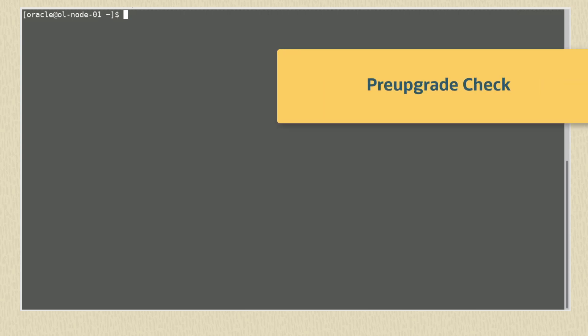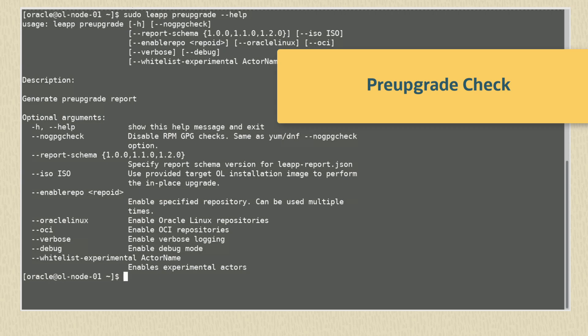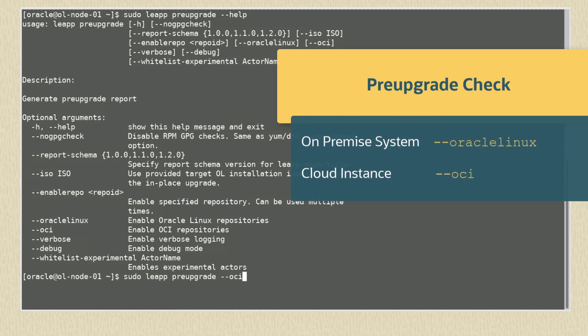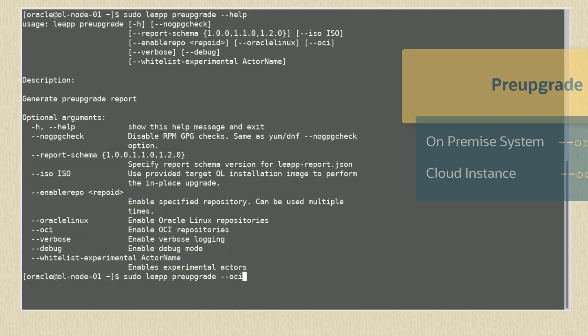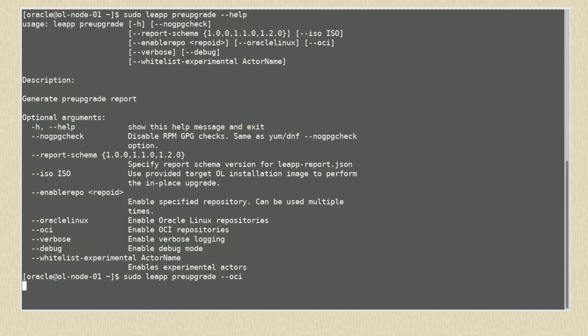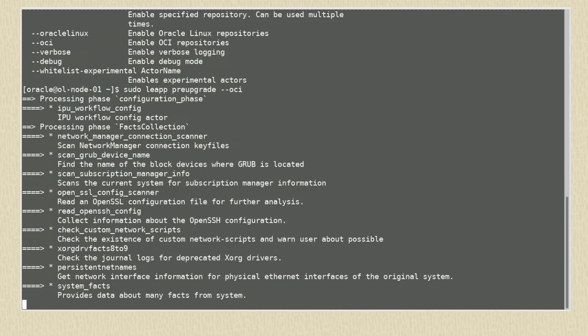We can now run the pre-upgrade process to assess if the system is prepared for a successful upgrade. The command is sudo leap pre-upgrade and we can add --help to show its options and switches. When running the pre-upgrade command, there are two command switches used for convenience: --oracle-linux and --oci. These identify whether you're upgrading with repositories for an on-premise system (--oracle-linux) or an Oracle Cloud Infrastructure system (--oci). Our system is an Oracle Cloud instance, so we use the command sudo leap pre-upgrade --oci.